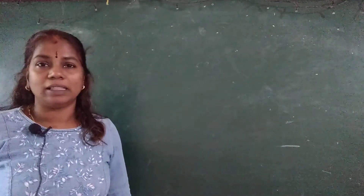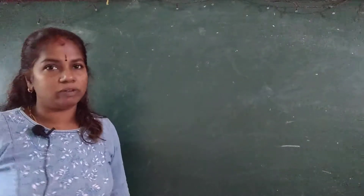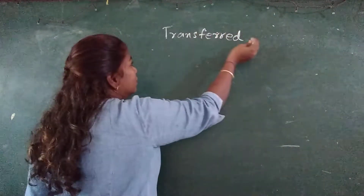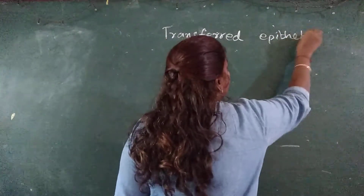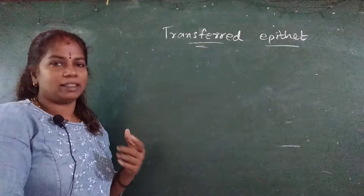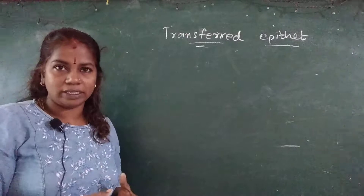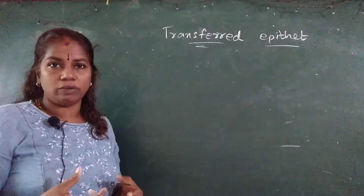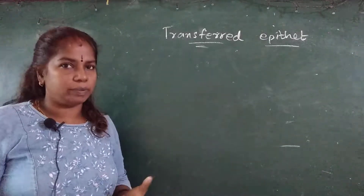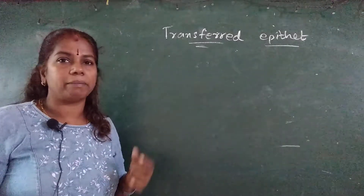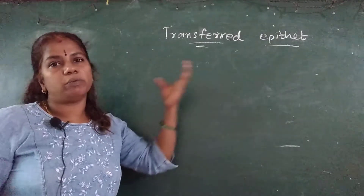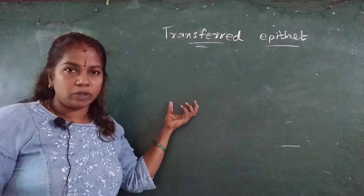In the previous video I taught you hyperbole. Now today we will see transferred epithet. From the name itself you can understand what it is. 'Transferred' means you are transferring from one thing to another. In this figure of speech, the quality — the human quality — the adjective or noun which is possessed by a human is transferred to another object or thing which is not related to that person. Transferred epithet means the adjective or noun is transferred from that particular person to another thing.